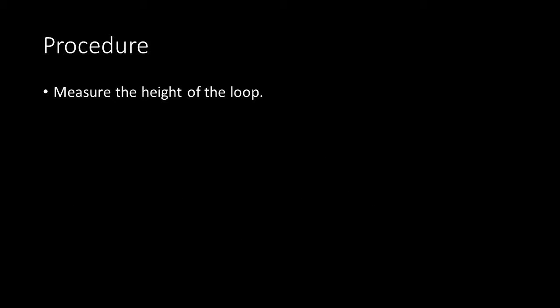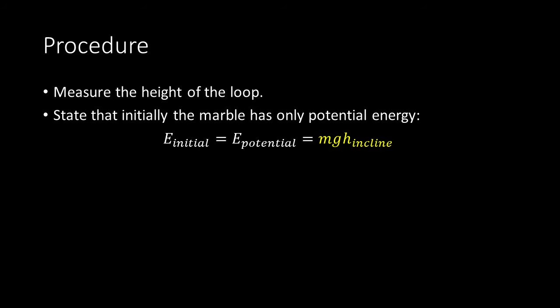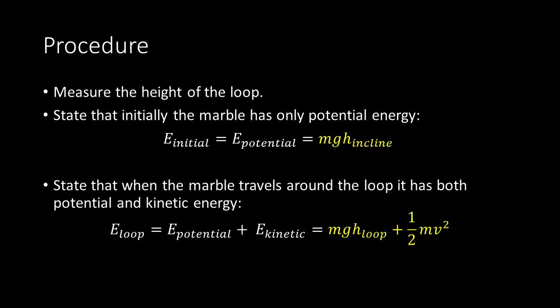So how are we going to approach this demonstration? First, we must measure the height of the loop. Next, we state that initially the marble only has potential energy, so initial energy equals potential energy, which equals mg times the height of the incline. When the marble travels around the loop, it has both potential and kinetic energy, so energy on the loop equals mg times h of the loop plus 1/2 mv².